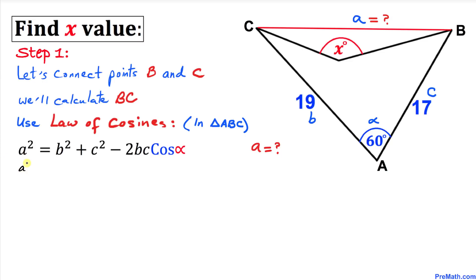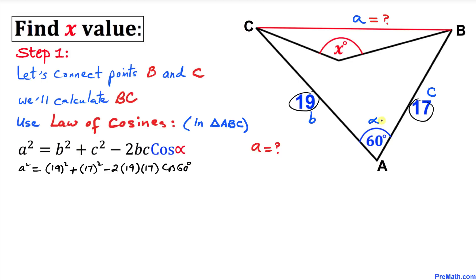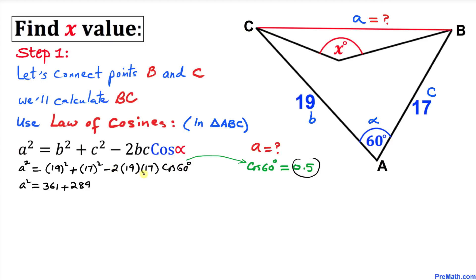Now let's fill in the blanks. a² = 19² + 17² − 2 × 19 × 17 × cos(60°). That gives us a² = 361 + 289 minus, and since cos(60°) = 0.5, multiplying out everything gives us negative 323.